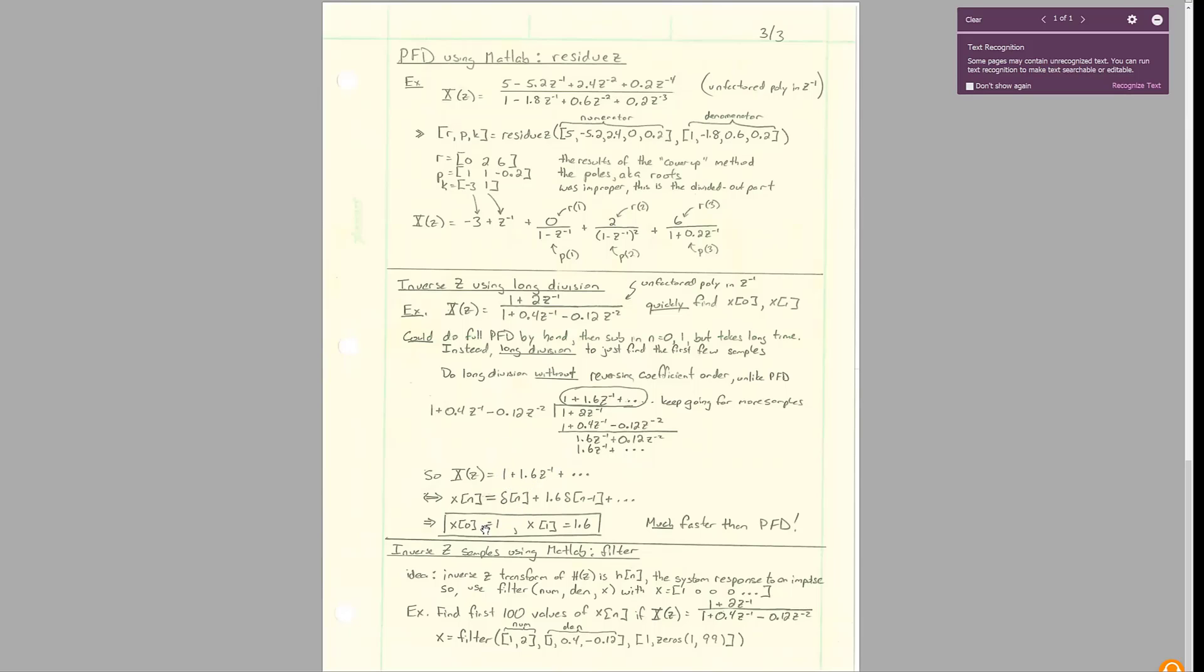And so this, you can just read out your resulting sequence. Your first time domain waveform here is one. Your second index in the time domain is 1.6 and so on.